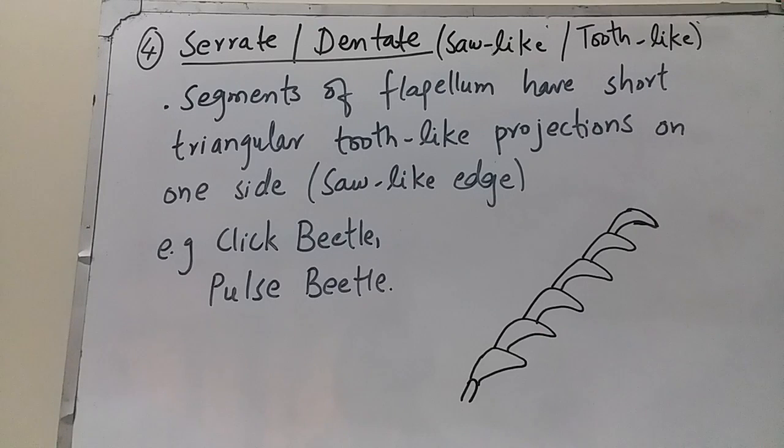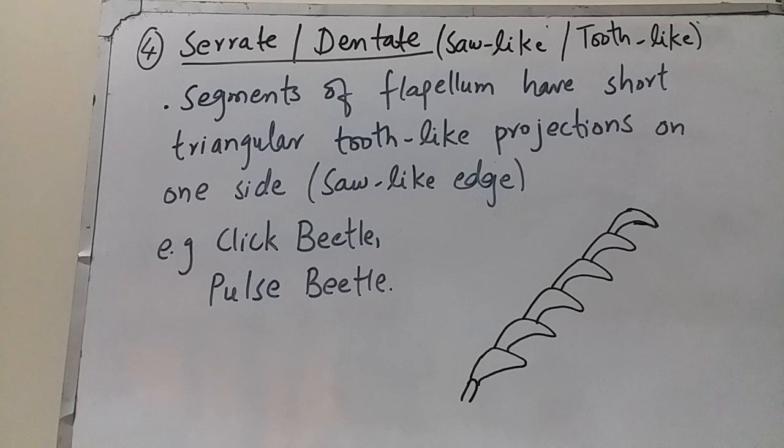The fourth type is serrate or dentate antenna, meaning saw-like or tooth-like. In serrate antennae, the segments of the flagellum have short triangular tooth-like projections on one side, giving a saw-like appearance. Serrate antennae are found in click beetles and pulse beetles.